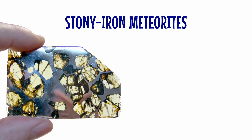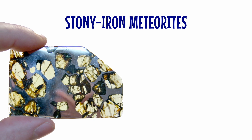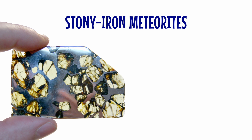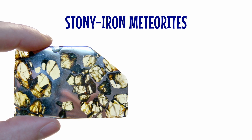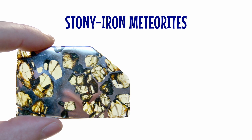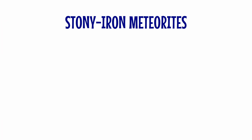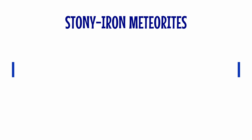Stony iron meteorites consist of almost equal parts iron-nickel metal and silicate minerals, including precious and semi-precious gemstones. They are considered some of the most beautiful meteorites. There are two different types of stony iron meteorites: pallasites and mesosiderites.